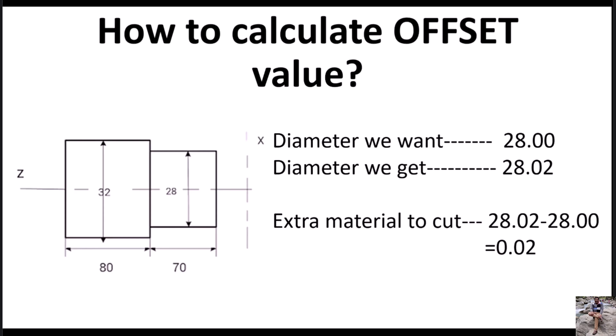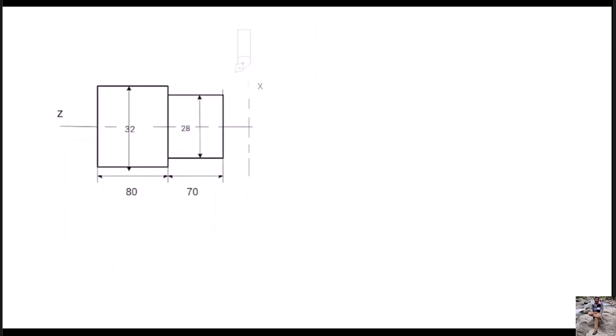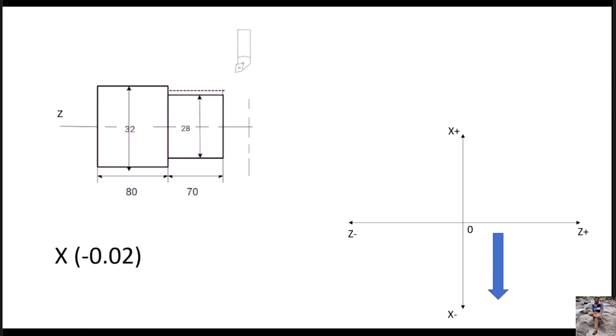So we will give the offset in X with a value of 0.02. Now we have to choose the tool. Wear offsets are mainly given to the finishing tool, as the finishing tool takes the last cut. To find which tool is the finishing tool, look inside your machine and find out which tool is performing the finishing process — that's how you will find your finishing tool number. If you carefully observe your turret, you will see the tool numbers written on it.